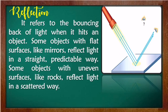Next is reflection. What is reflection? It refers to the bouncing back of light when it hits an object. For example, the flashlight hits the glass and it bounces — that is reflection. Some objects with flat surfaces, like mirrors, reflect light in a straight, predictable way. Some objects with uneven surfaces, like rocks, reflect light in a scattered way. Try putting a light with your mirror and observe if it's bouncing back the light.